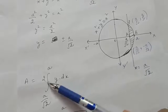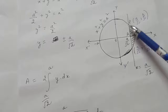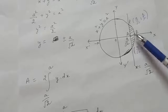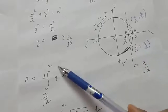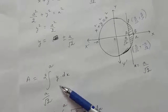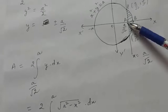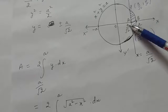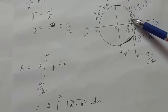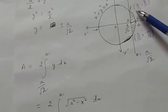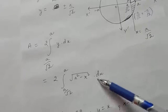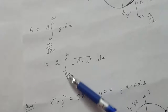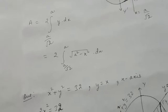The area of this region will be the integral of y dx from a/√2 to a, where y is from the circle, i.e., √(a² − x²). This region from a/√2 to a lies below the circle, so we take the function of the circle as √(a² − x²). Now solve this integral, put the limits, and you will get the answer. The rest of the part you have to do by yourself.